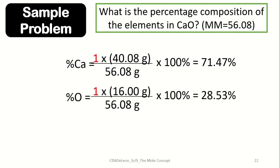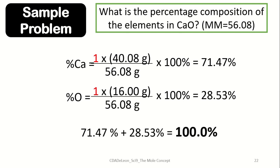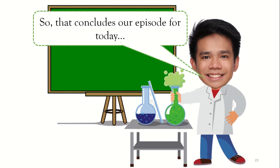On the other hand, the percentage composition of oxygen is equivalent to 1 times 16, its atomic mass, divided by its molar mass of 56.08 multiplied by 100%, which is equivalent to 28.53%. Getting the sum of these two will also be equivalent to 100%. So that concludes our episode for today.